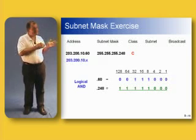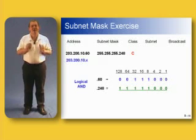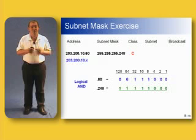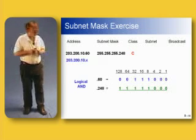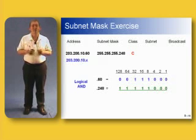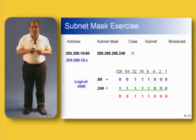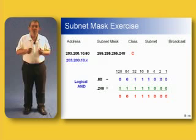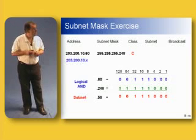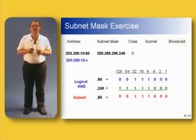We convert the last octet: decimal 60 gives us binary 00111000. The mask .248 converts to binary as five ones followed by three zeros: 11111000. Performing the logical AND between the two: 0,0,1,1,1,0,0,0. Converting that back to decimal gives us .56. So our subnet address is 203.200.10.56.